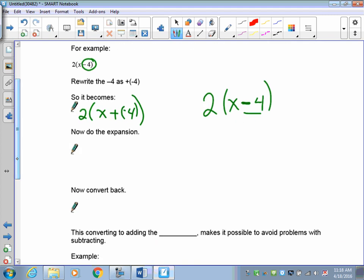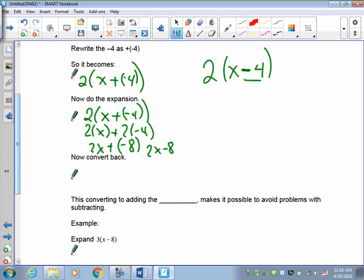So to do the expansion, all right, if you rewrote it, 2 onto x plus negative 4, you would get 2 onto x plus 2 onto negative 4. So that gives you 2x plus negative 8, which when you simplify it, gives you the 2x minus 8. Okay? Actually, converting it back is here.